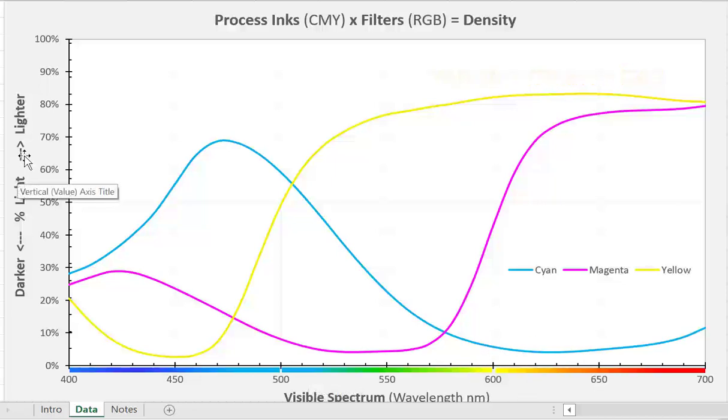On the vertical axis to the left is percent light. It can be percent light transmission, transmittance, or it can be percent light reflection. So all you need to know is that this is less light, and this is more light.